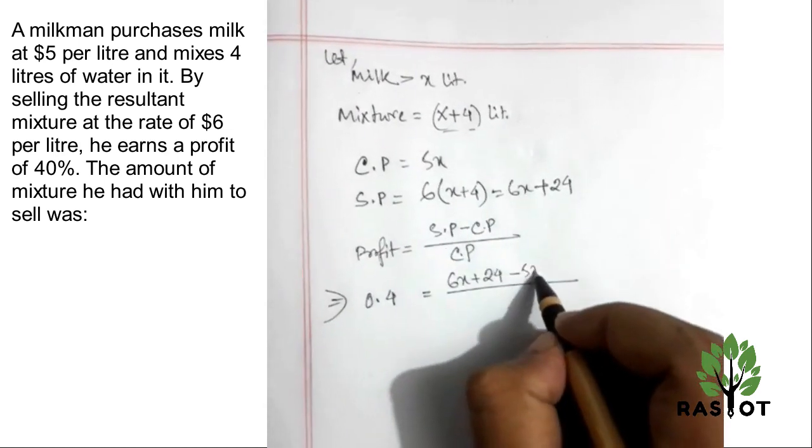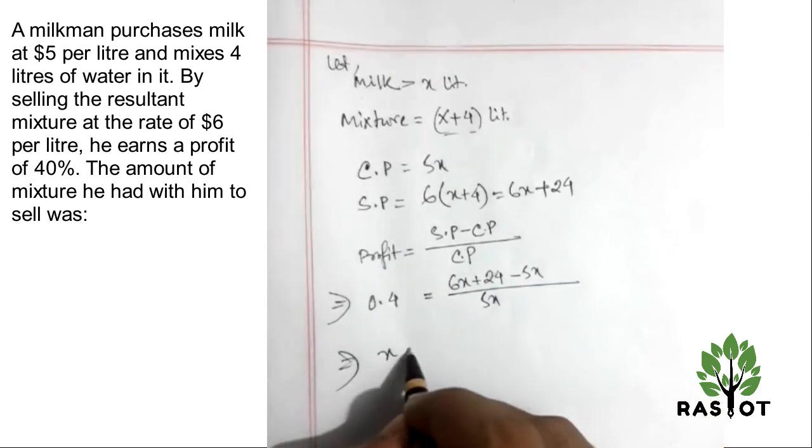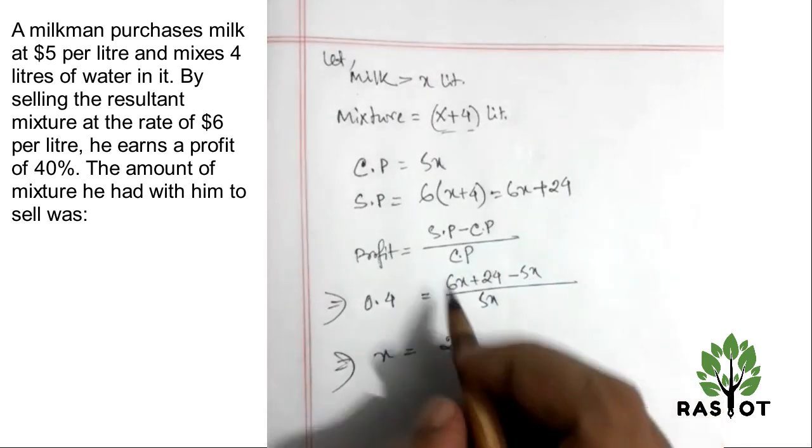This equals 0.4. Solving this we get x equals 24. This means the milk initially was actually 24 liters.